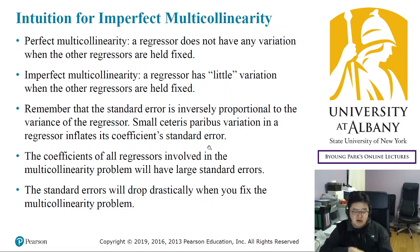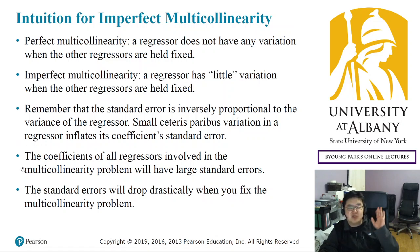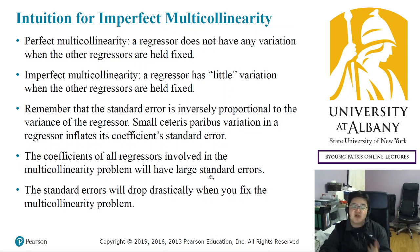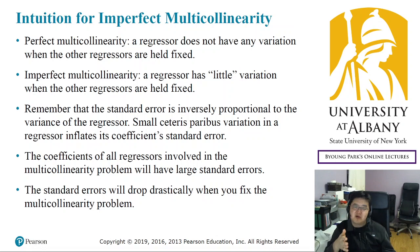Therefore, if there is imperfect multicollinearity, one of the regressors has small ceteris paribus variation. Because of the small variation, the standard error will be huge, meaning the estimator is inaccurate. The small variation inflates the coefficient standard error — this is the critical problem. Because if the standard error is too large, you cannot get any conclusion from the results; the estimator is simply unreliable. So if you think your estimators do not have reasonable standard errors, think about the multicollinearity problem.